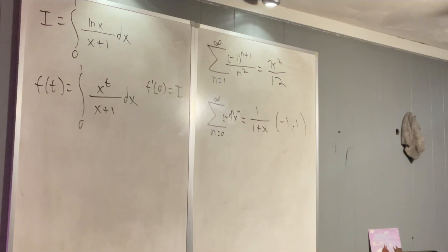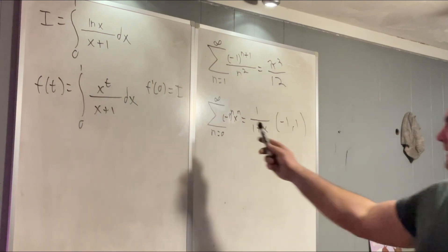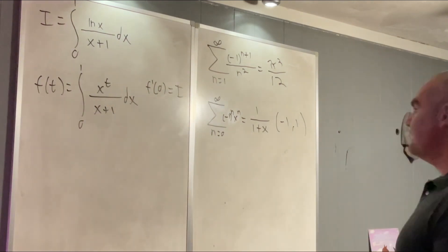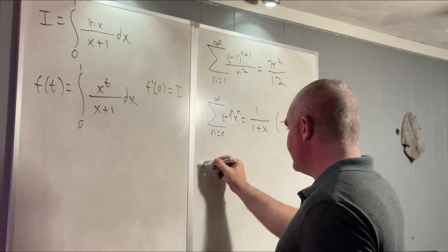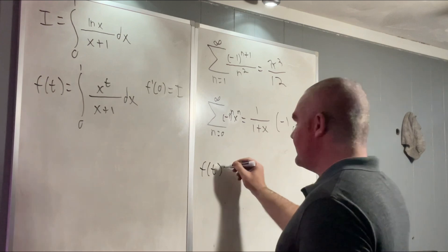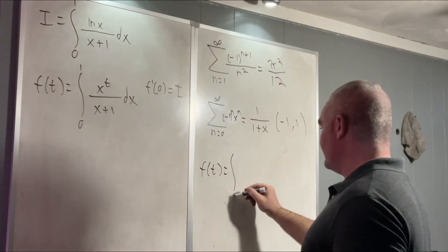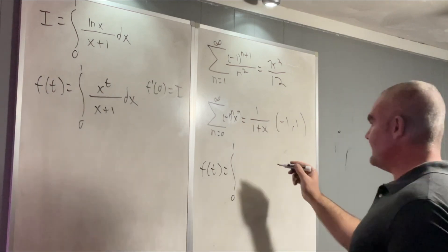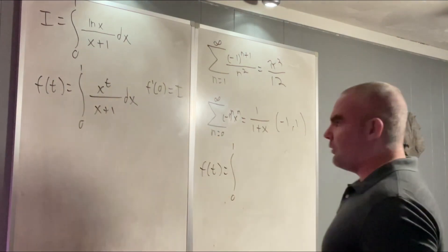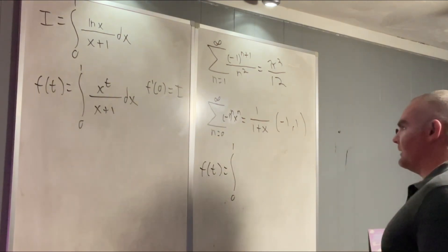Great. All right. So let's rewrite our f of t utilizing this fact. So f of t is going to be equal to the integral from 0 to 1, and then we're gonna have, let's see, we'll do the 1 over x plus 1 first. That's going to be the sum from n equals 0 to infinity of negative 1 to the n x to the n.